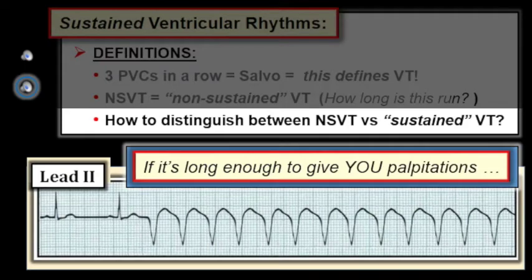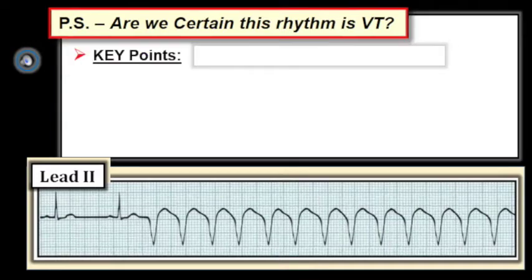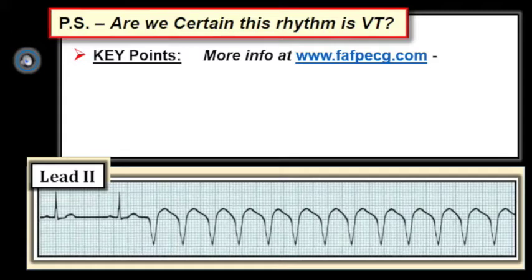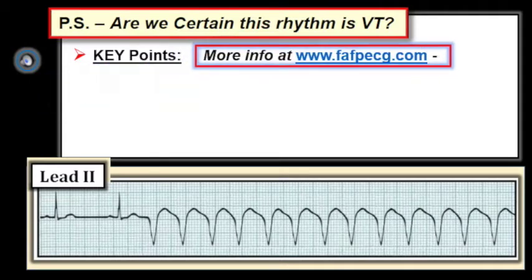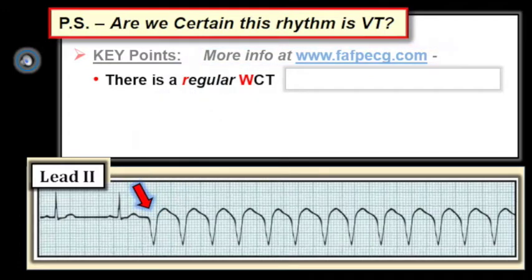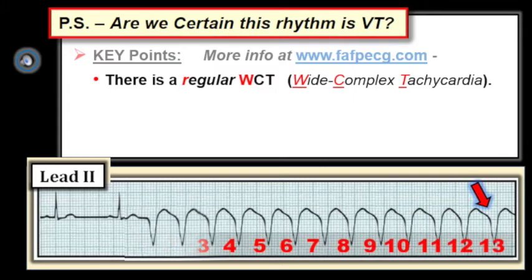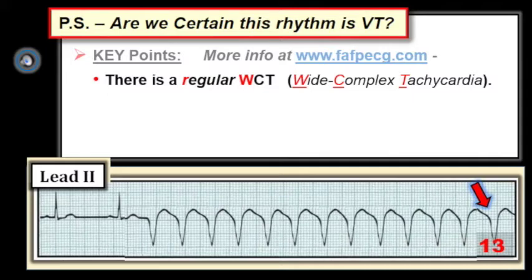That said, are we certain this rhythm is VT? This brings up a number of key points, some of which go beyond our time allotment — for more on this topic, please check out our supplementary material available for free download at www.fafpecg.com. The optimal way to describe the rhythm is by saying that after two sinus beats there is onset of a regular WCT — wide complex tachycardia — without further sign of atrial activity. Specifically, we see 13 beats of this regular wide rhythm at a rate of about 150 per minute before the rhythm strip ends.